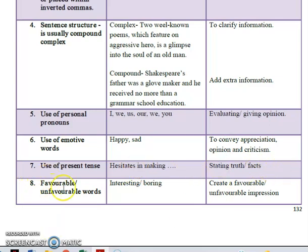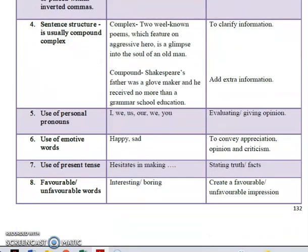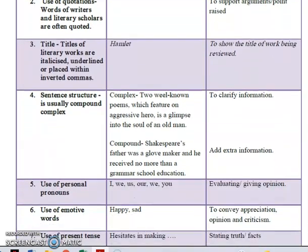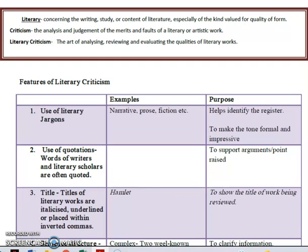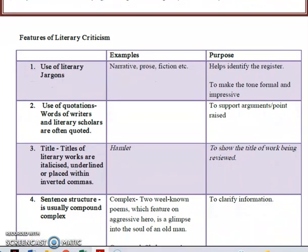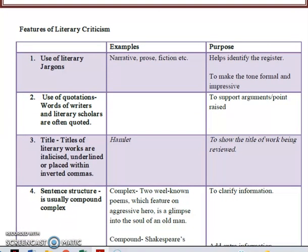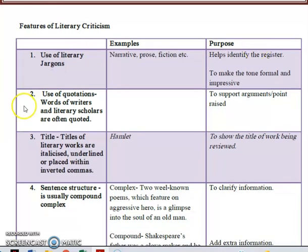And lastly, you have the use of favorable or unfavorable words. For example, 'interesting' would be favorable, and 'boring' would be unfavorable. This creates a favorable or unfavorable impression. When referring to your samples, you look at the words being used, and you can make very precise decisions on what is an example of each register feature and the purpose of each.